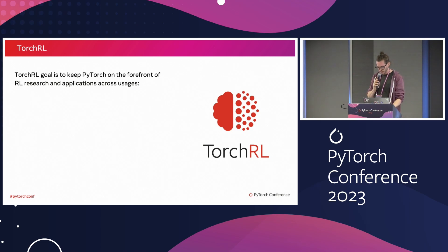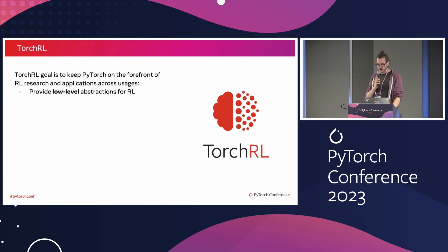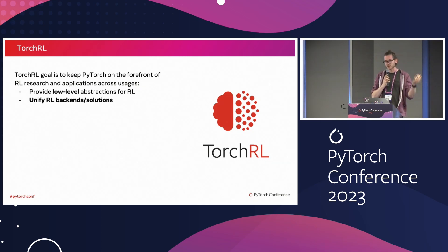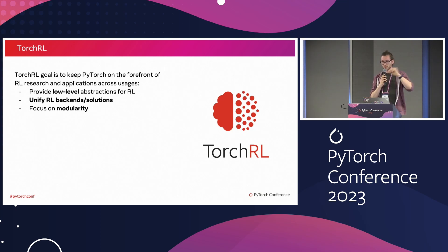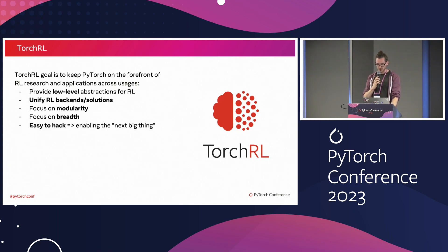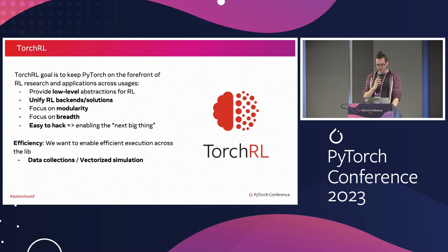What is TorchRL in very few words? TorchRL is a library in the PyTorch ecosystem which provides low-level abstractions for reinforcement learning. It unifies RLHF backends such as OpenAI Gym and other simulators, and tries to have a common API for various RL algorithms, losses, and so on. We focus a lot on modularity — you should be able to swap components easily and maybe just use one component of the library without using the whole thing. We focus on breadth rather than depth, and the library is made to be easy to hack.